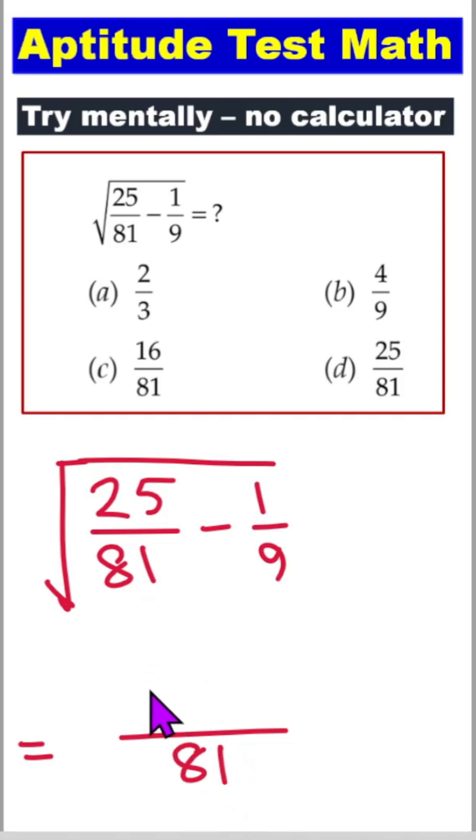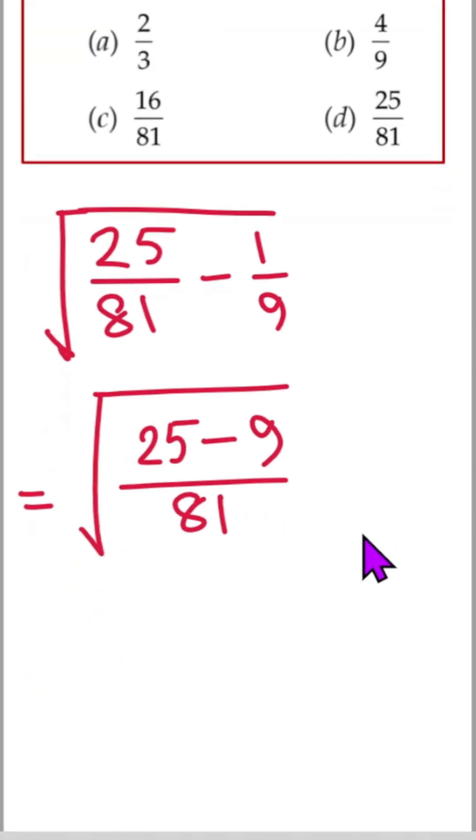81 divided by 81 is 1. 25 times 1 is 25 minus 81 divided by 9, it will be 9. 1 times 9 is 9 and it will be under square root.